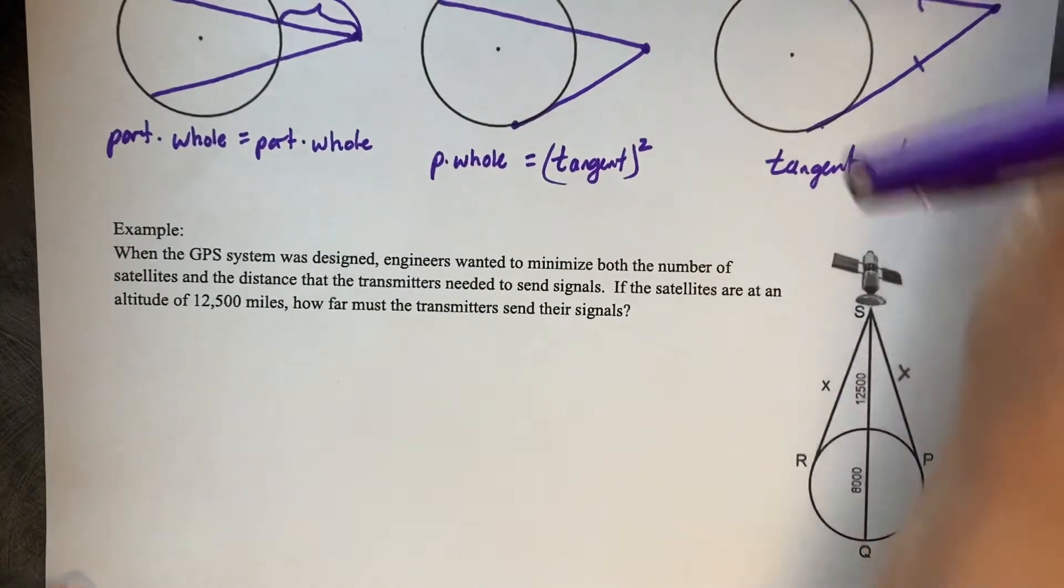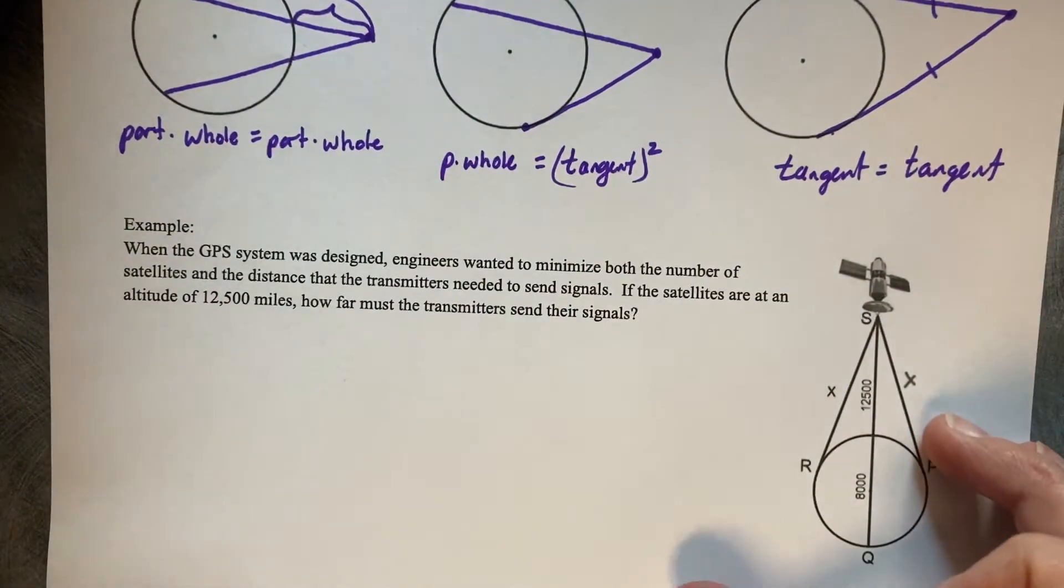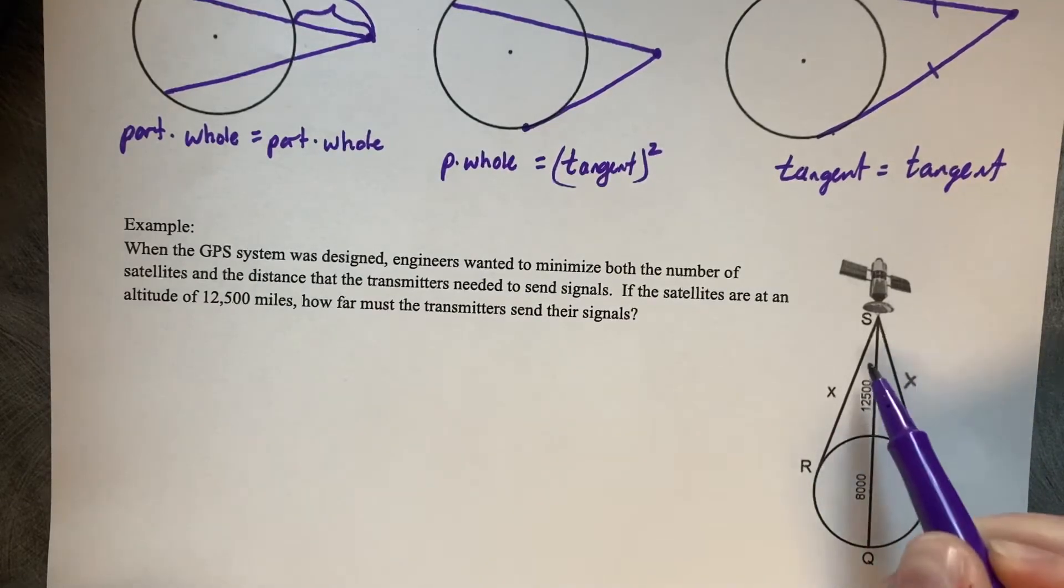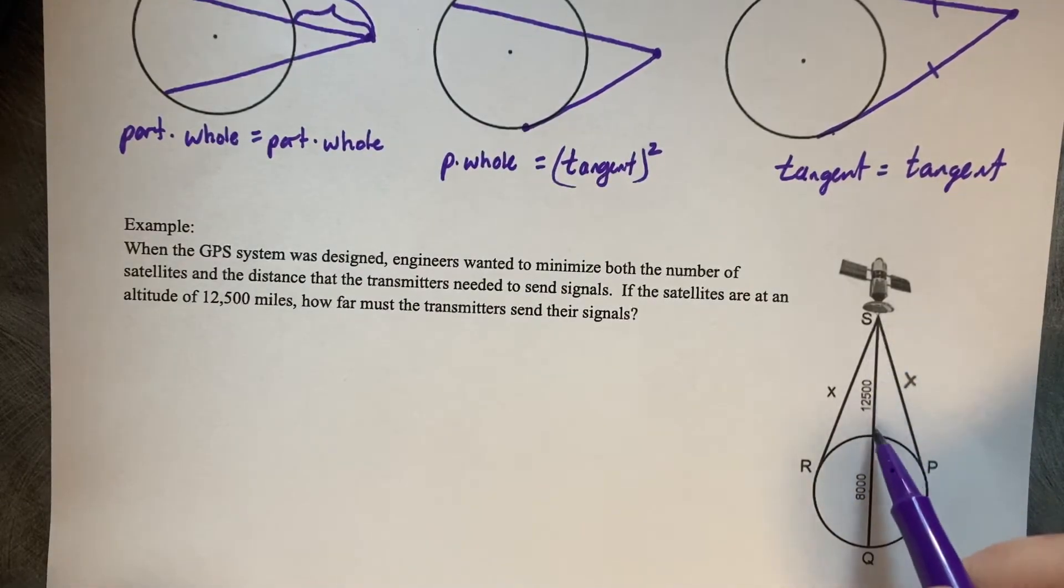So here's our example. When the GPS system was designed, engineers wanted to minimize both the number of satellites and the distance that the transmitters needed to send signals. If the satellites are at an altitude of 12,500 miles, how far must the transmitters send the signal? So we're looking for this length of X. We've got 12,500 to the earth, and then we also know that the earth's diameter is 8,000.